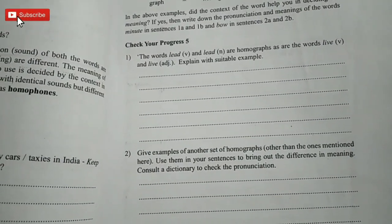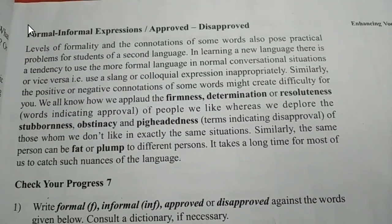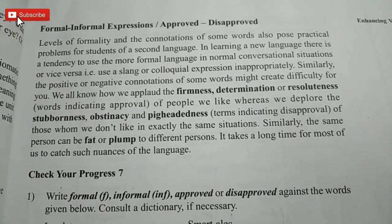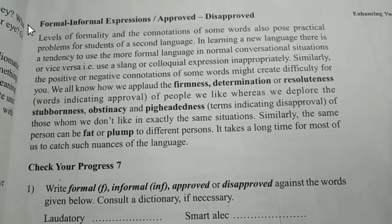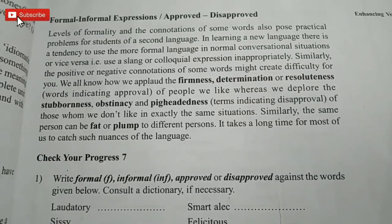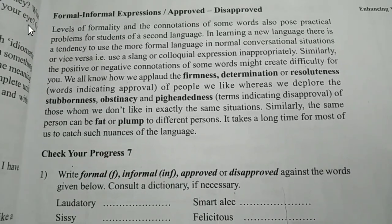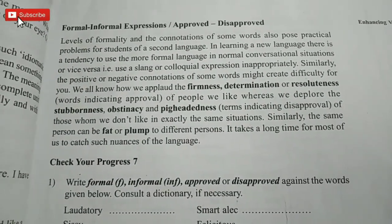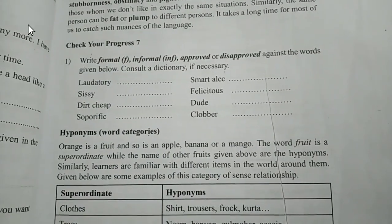Here is formal and informal expression. Sometimes we need to use formality, and sometimes we are not able to understand a second language like English — any language that is not our native language or mother tongue, such as Hindi. If you're not able to understand a specific language, you use formal words in your normal conversation because you don't know other words. Please do check your progress seven, and also learn examples of hyponyms and word categories — like colors (blue, red, white), clothing (shirt, trousers), and trees (mango, neem).